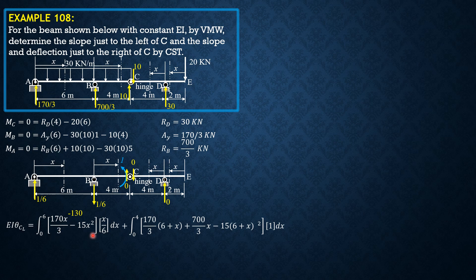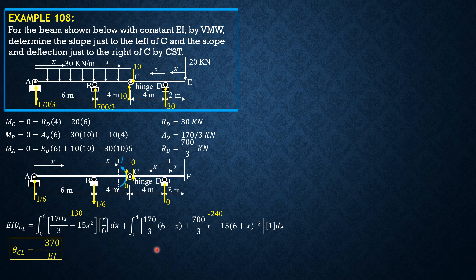The first integral evaluates to negative 130, and after simplification the second integral is negative 240. Combining both, θ_C-left equals negative 370/EI.